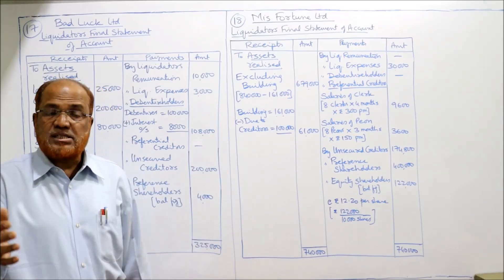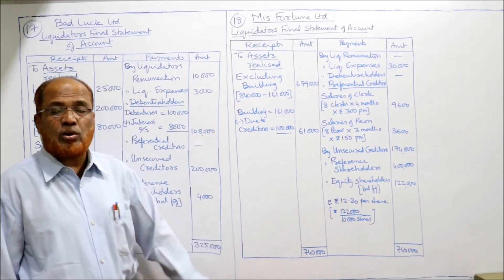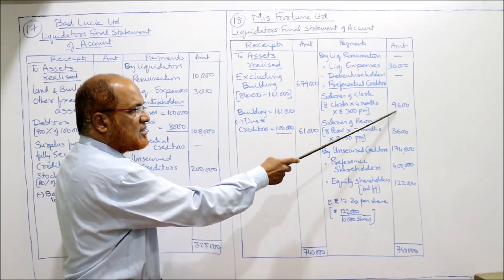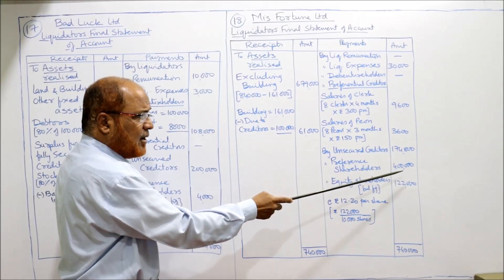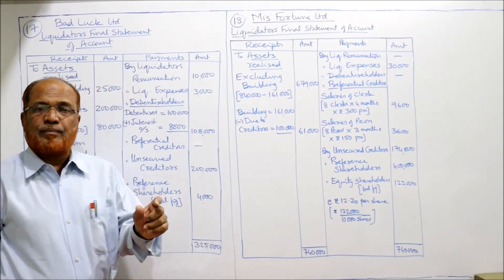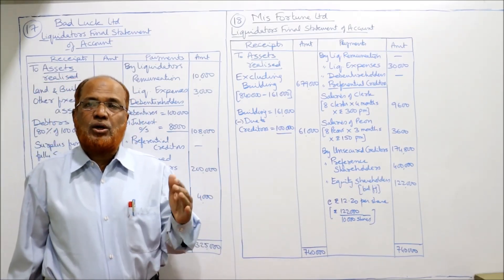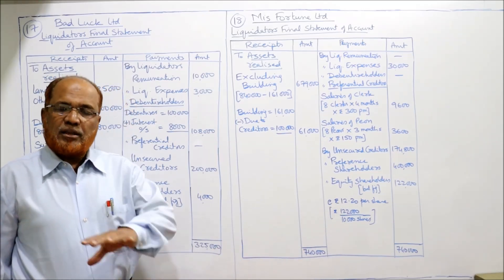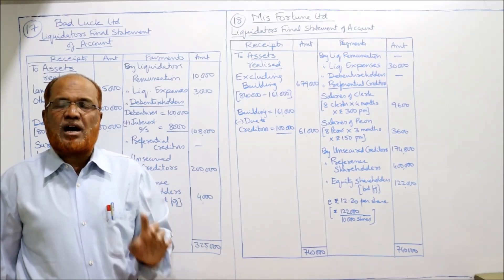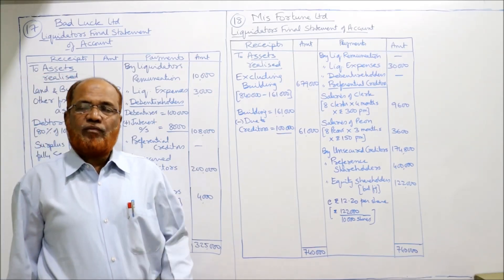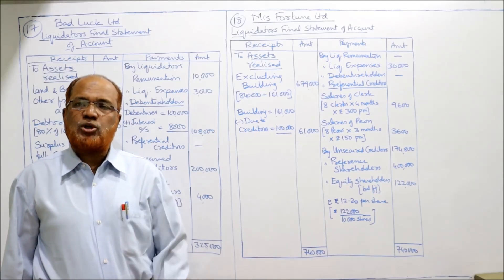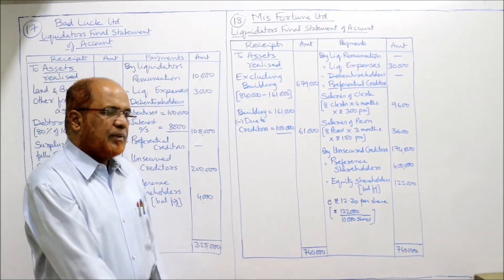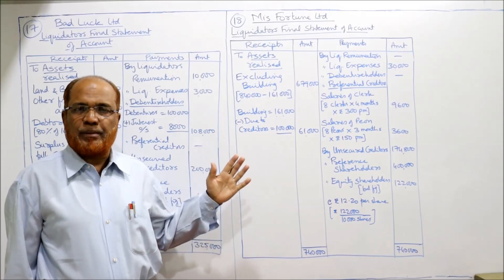From 7,40,000 subtracting: 30,000 + 9,600 + 3,600 + 1,74,800 + 4,00,000 — the remaining balance is 1,22,000. This will be paid to equity shareholders as a balancing figure. Each equity shareholder gets 12 rupees 20 paisa — calculated as 1,22,000 divided by 10,000 shares = rupees 12.20 per share. Problems 17 and 18 are simple with no working notes required.